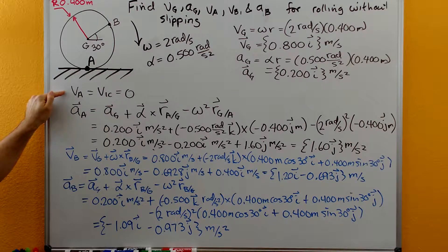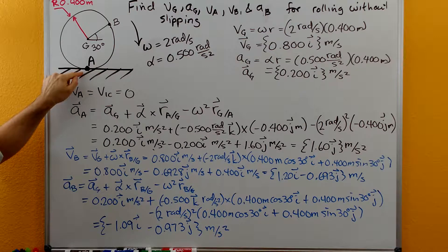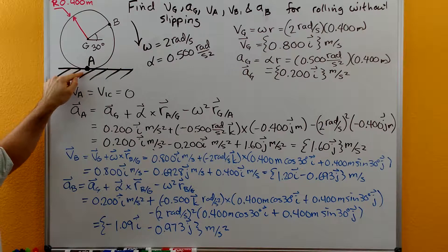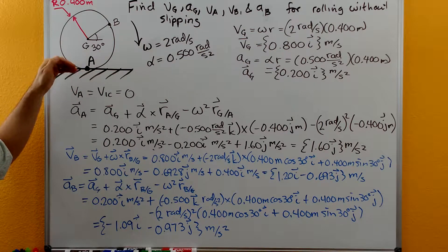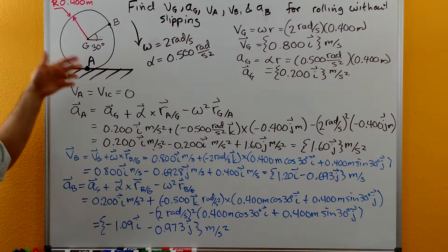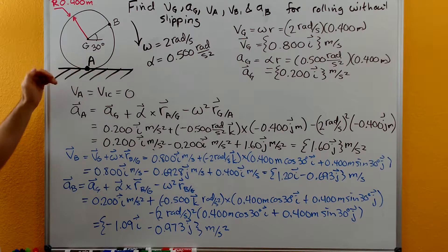The velocity of point A is going to be equal to 0 because A is the instantaneous center. It's where it contacts the ground. And so if it's not slipping it must be moving the same speed as the ground. The ground stationary so it must be stationary at A.